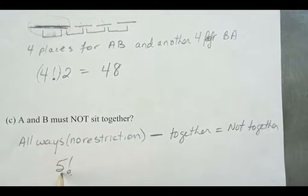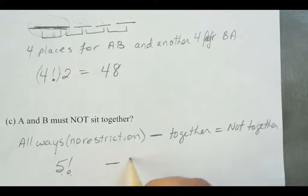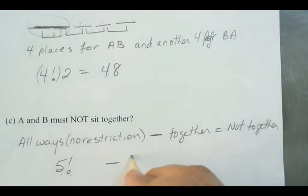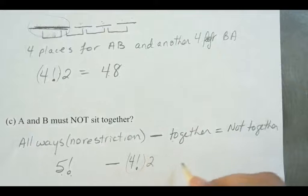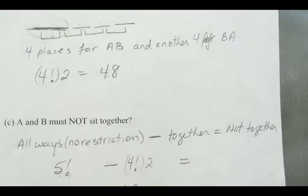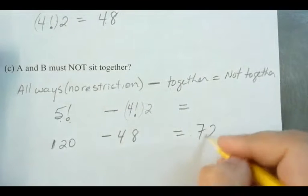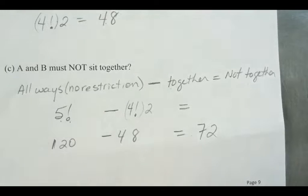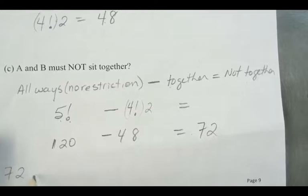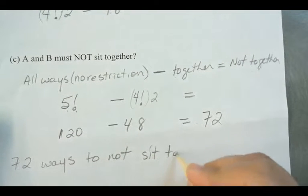All arrangements with no restriction is 5 factorial. The arrangements where A and B sit together is 4! × 2, which we already found to be 48. So the number of arrangements where A and B do not sit together is 5! minus 4! × 2, which equals 120 minus 48 = 72. There are 72 ways they don't have to sit next to each other.